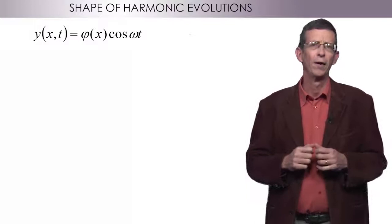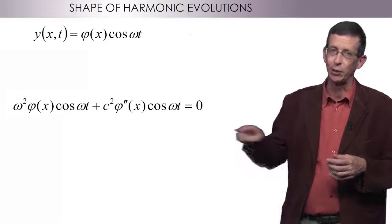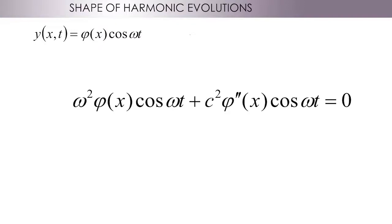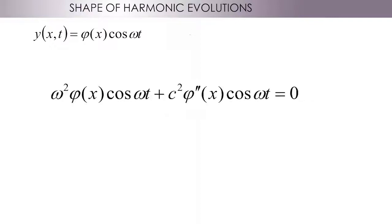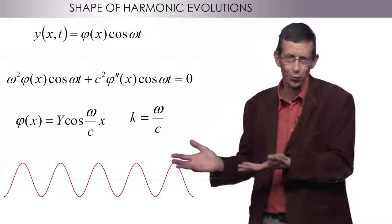I can also go the other way and ask, what is the shape phi of x that oscillates at a frequency omega? By including such a displacement in the equation for the cable, I have omega squared phi cos omega t plus c squared phi double prime cos omega t equals zero. The solution for phi is a sinusoidal shape of wave number k equals omega over c. This is the same oscillating solution, of course, no surprise.